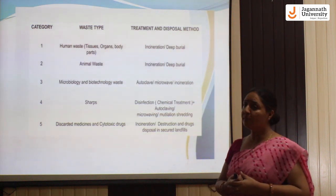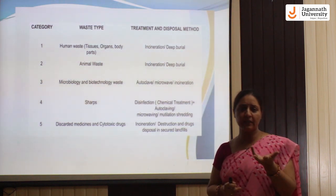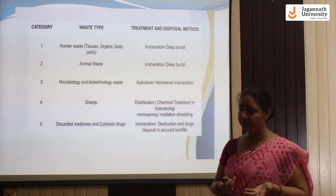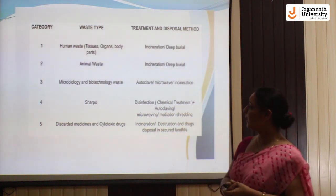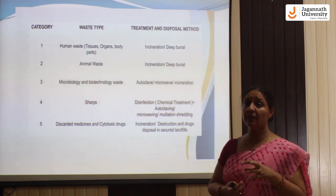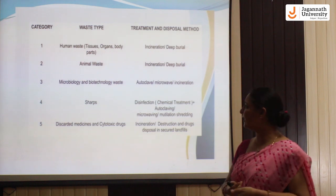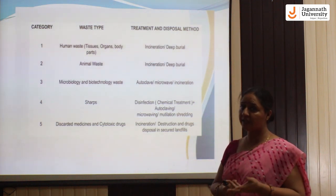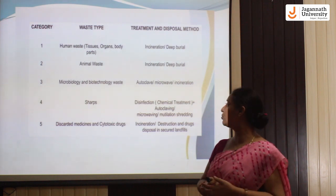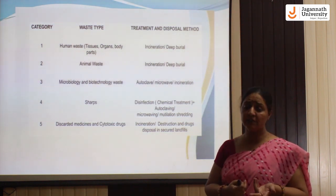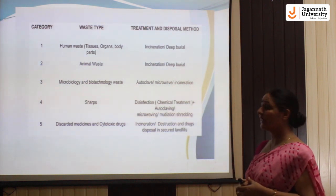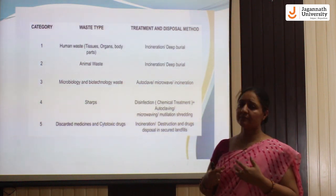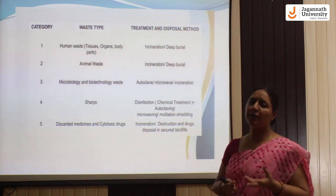Animal waste also requires incineration and deep burial. The third category is microbiology and biotechnology waste — contaminated from microbial sources — which can be treated by autoclaving, microwaving, or incineration. Incineration is a high-temperature, high-pressure burning process. For discarded sharps, we use chemical treatment, autoclaving, microwaving, or shredding methods.